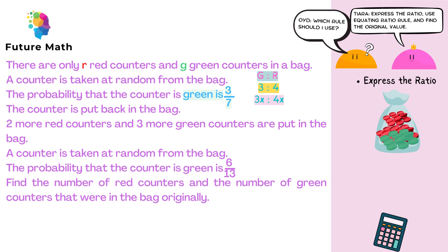Now we're going to add two more red counters. So we add 2 to the 4x, so that would be 4x plus 2. And we're adding three more green counters, so that's going to be 3x plus 3. So this expression of our ratio is equal to 6 over 13 in the green part.